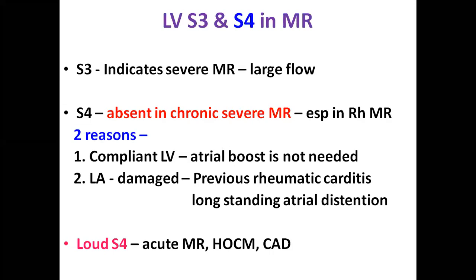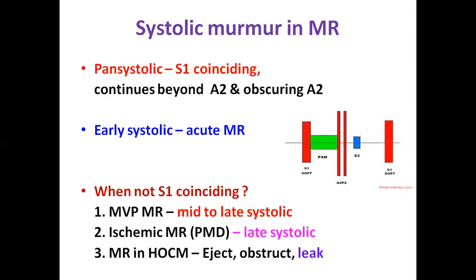S4 is a feature of acute MR or MR associated with coronary artery disease or hypertrophic obstructive cardiomyopathy. The systolic murmur in rheumatic MR is pansystolic, starting with S1 and continuing beyond A2, sometimes obscuring A2 — because there is a persistent gradient across the mitral valve even in the later part of systole. However in acute MR the murmur is only early systolic because of rapid equalization of pressure in the LA in the later part of systole.